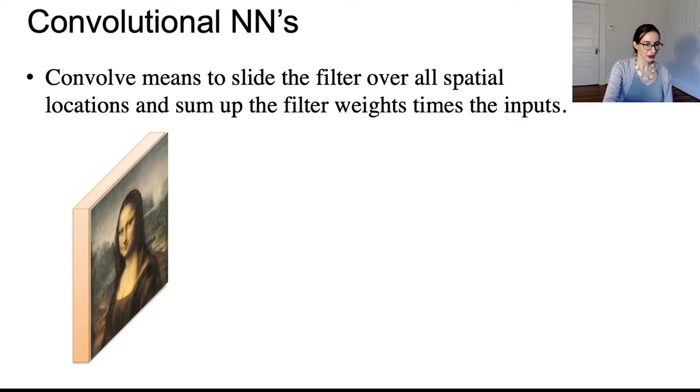Okay, so convolve means to slide a filter over all spatial locations, and as we did for Viola and Jones, we'd sum up the filter weights times the inputs. So here I'm convolving by sliding this filter over all the spatial locations. At each spatial location, we multiply the filter weights times the inputs, and then add that all up, and that goes as input into the next layer of the network.